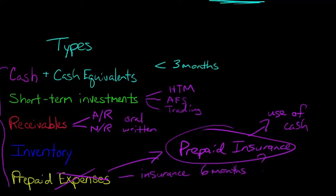So really, these are the five most common types of current assets. And just remember that it's something that we expect to turn into cash within the next year or the operating cycle, whichever happens to be longer.